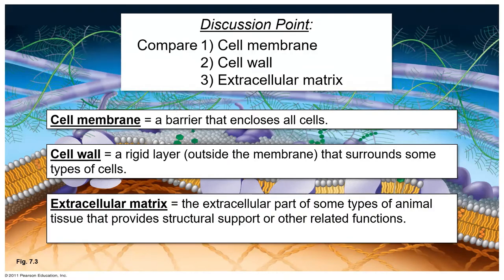The last definition: extracellular matrix — this is a material found outside of some animal cells. We'll talk about some examples in a few minutes, but first let's talk about cell walls.